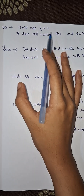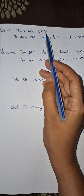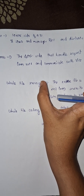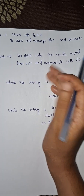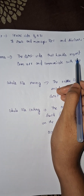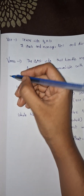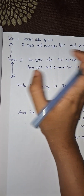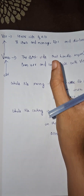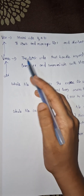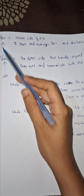Vise stores and manages files and directories — that is the role — server side. Venus is the client side that handles requests from the user and communicates with Vise. The user makes a request for remote file access, Venus handles it on the client side and communicates with Vise on the server side.